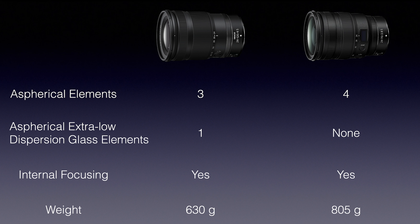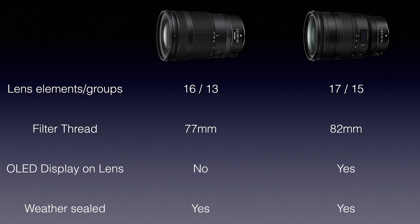Interestingly, the longer focal length 24-120mm is actually lighter than the standard zoom — 630g versus 805g — and the standard zoom is also more voluminous. Lens elements are 16 on the 24-120mm and 17 on the standard zoom, so almost the same. Both are very complex, highly performing lenses. Filter thread is smaller on the 24-120mm, consistent with its lower weight, while the standard zoom uses 82mm filters, making filters more expensive. The 24-70mm has the OLED display while the 24-120mm does not — I don't think it moves the needle, but for some it can be a useful guide showing parameters and depth of field indication.